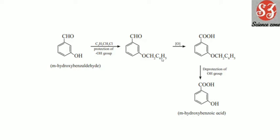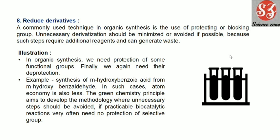But now we still have the ether group — we don't want ether, we want the OH group back. So we do deprotection to get the OH group again. This means we generated more steps and more waste. These are the kinds of steps we need to avoid and minimize so that our time and waste are also reduced.